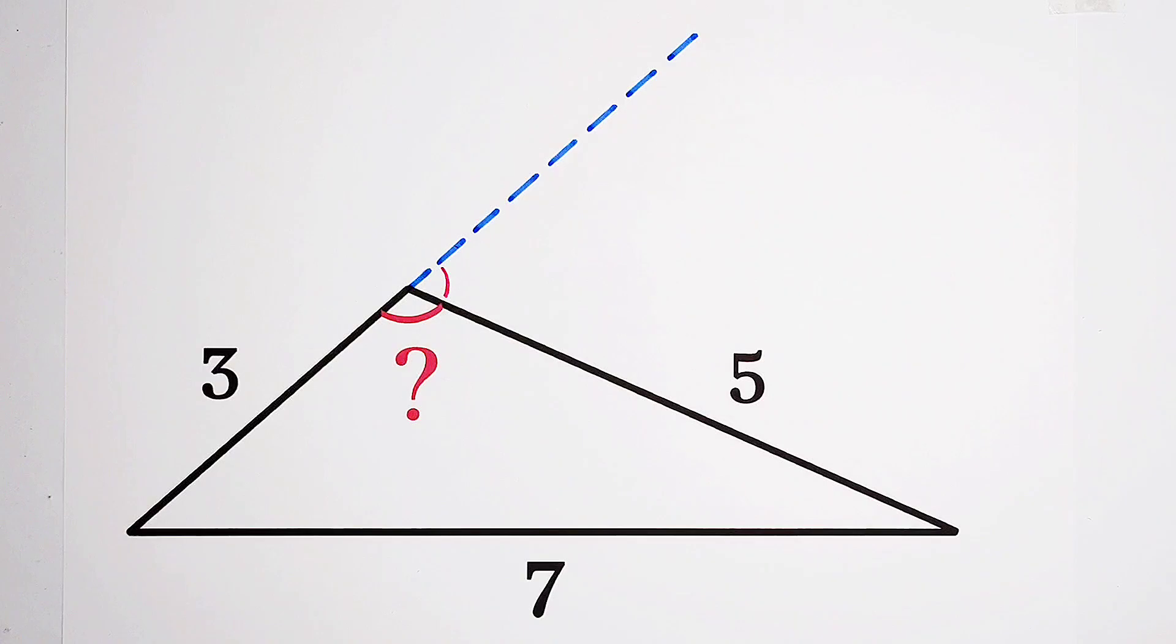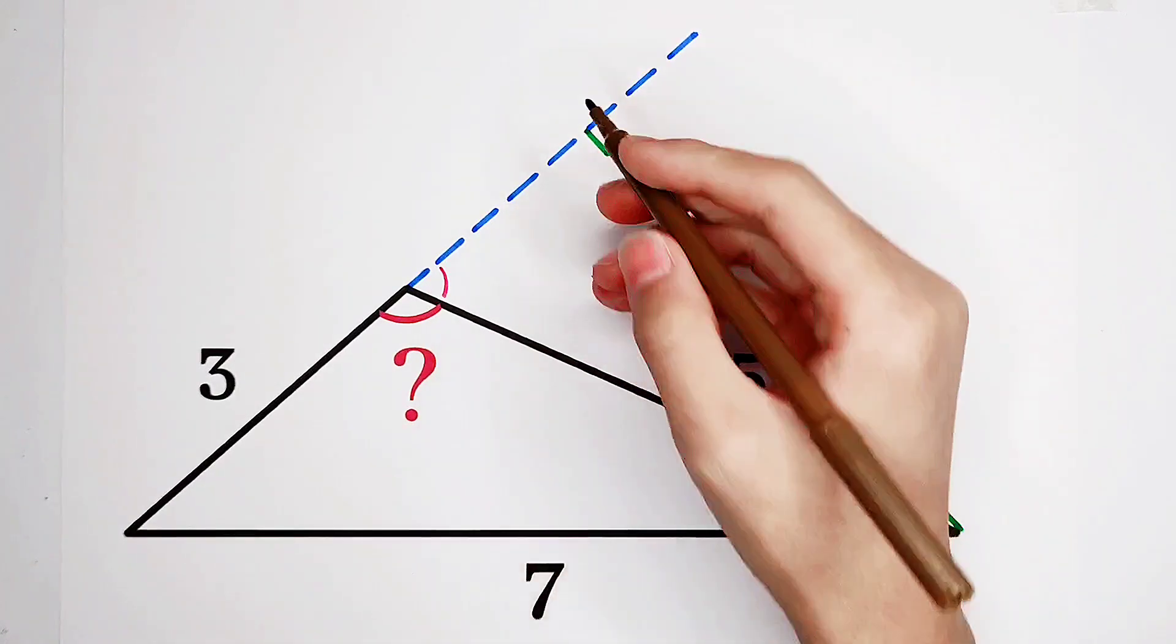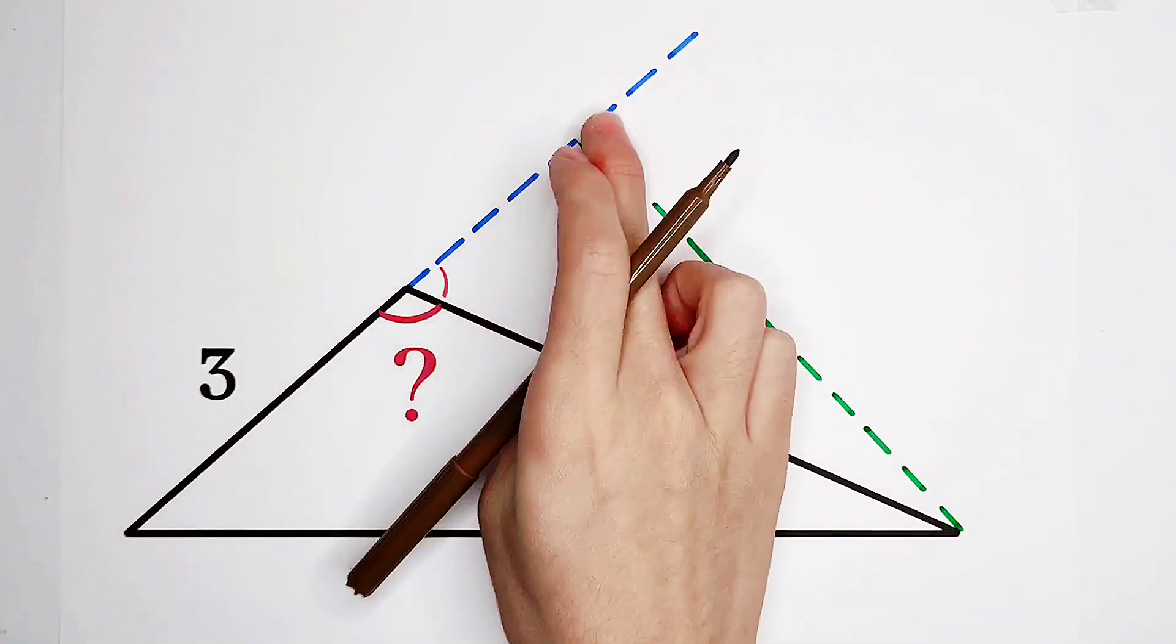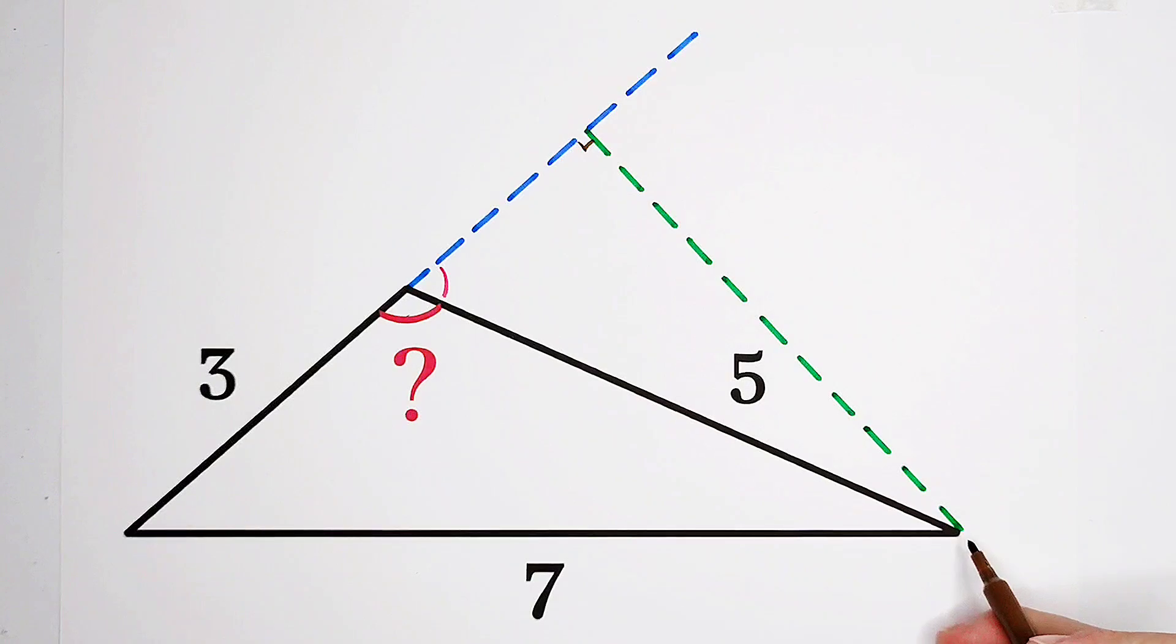Our job is to work out this angle. So now what I'm going to do is to construct its perpendicular from this point. So here is of course 90 degrees. In other word, I've just constructed the height of this triangle from this point. Simple? Easy?